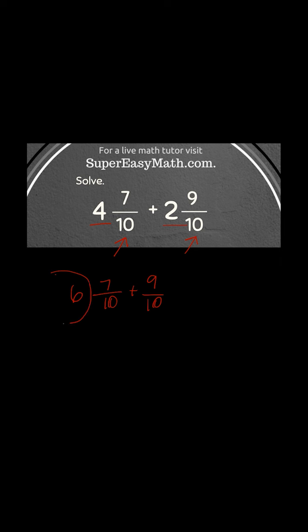Now I'm not going to deal with the 6 for a minute, so I'm just going to loop it around and kind of get it out of the way. Now I'm going to add these together. 7 plus 9 is 16. 10 plus 10 doesn't happen. You just rewrite it as 10.